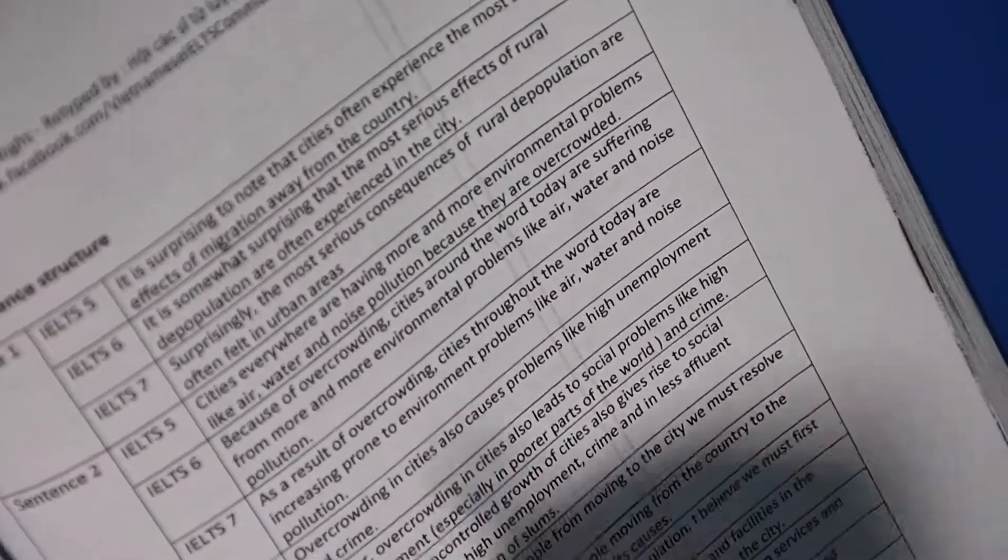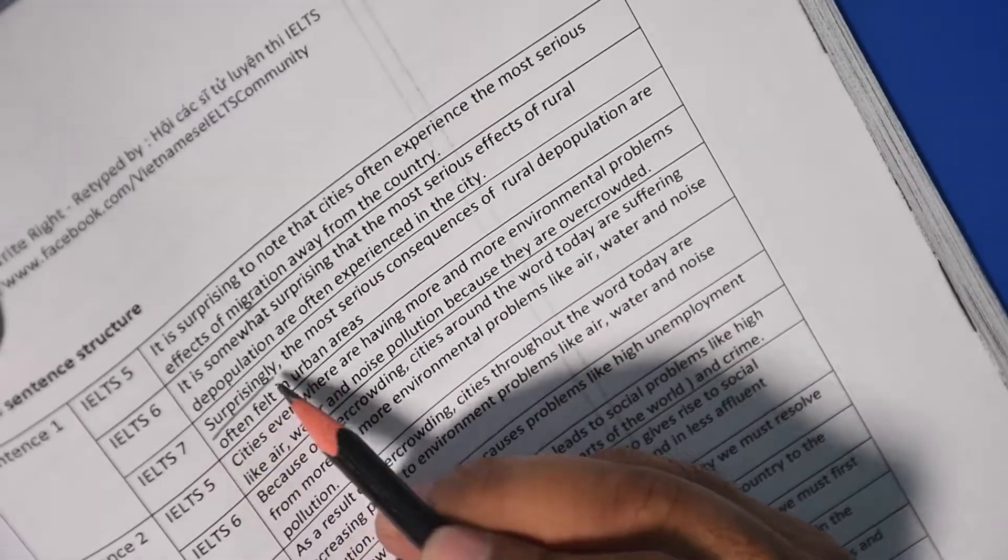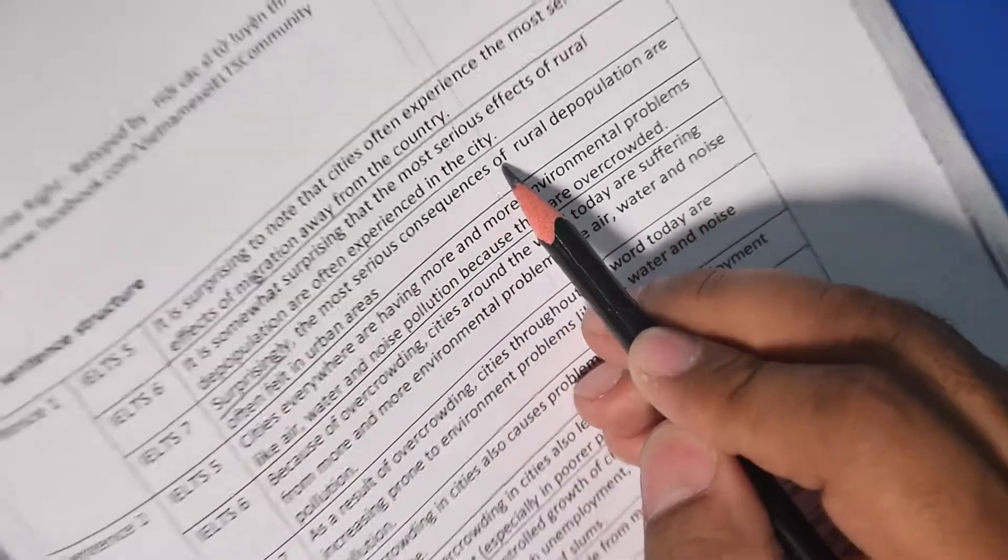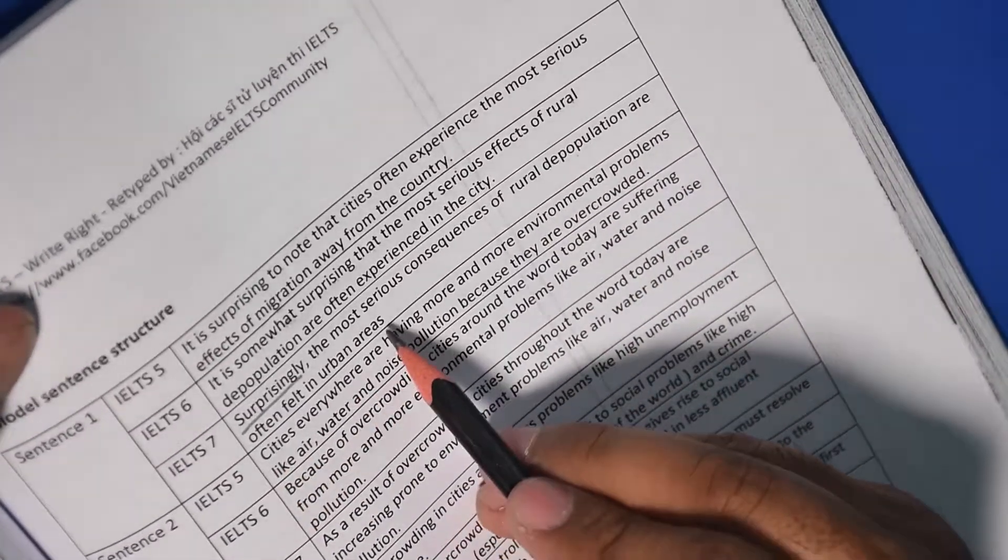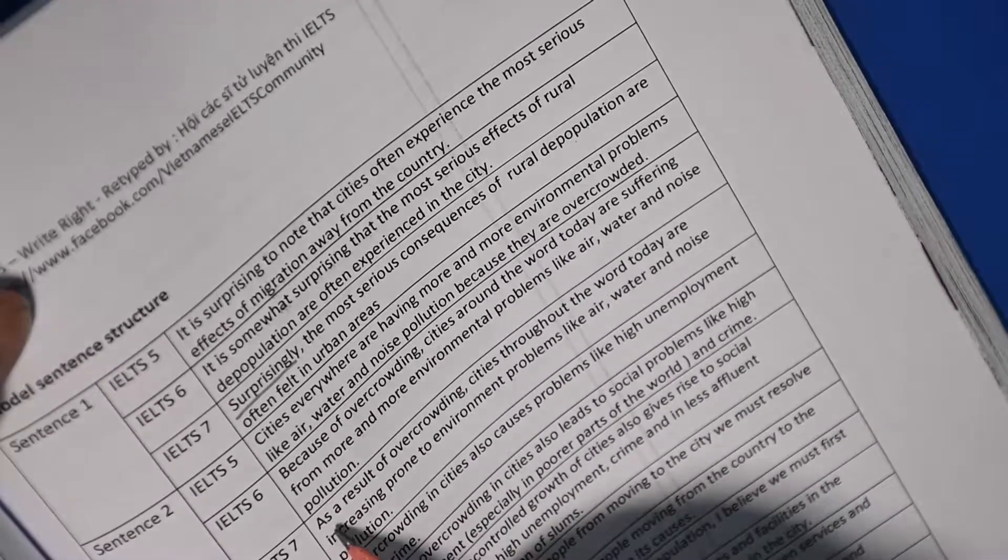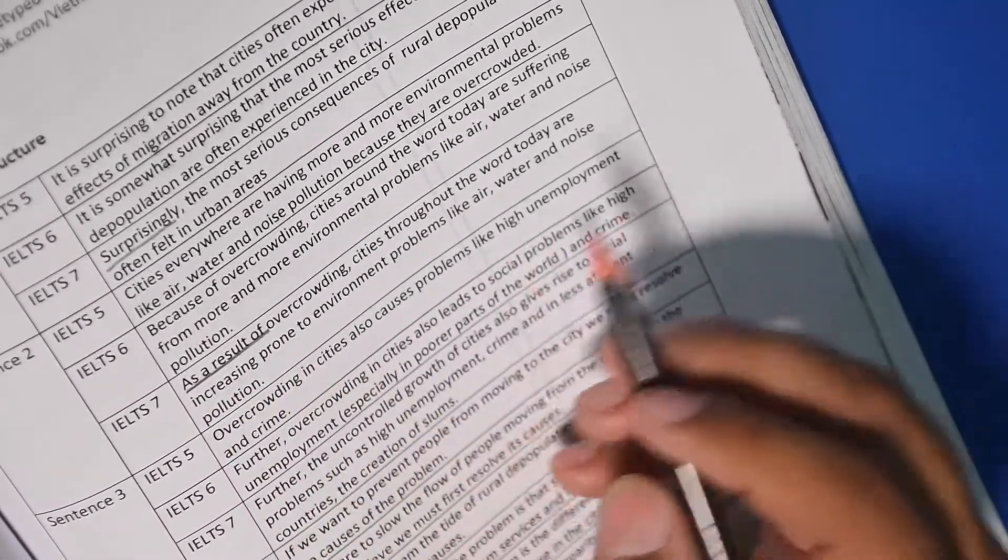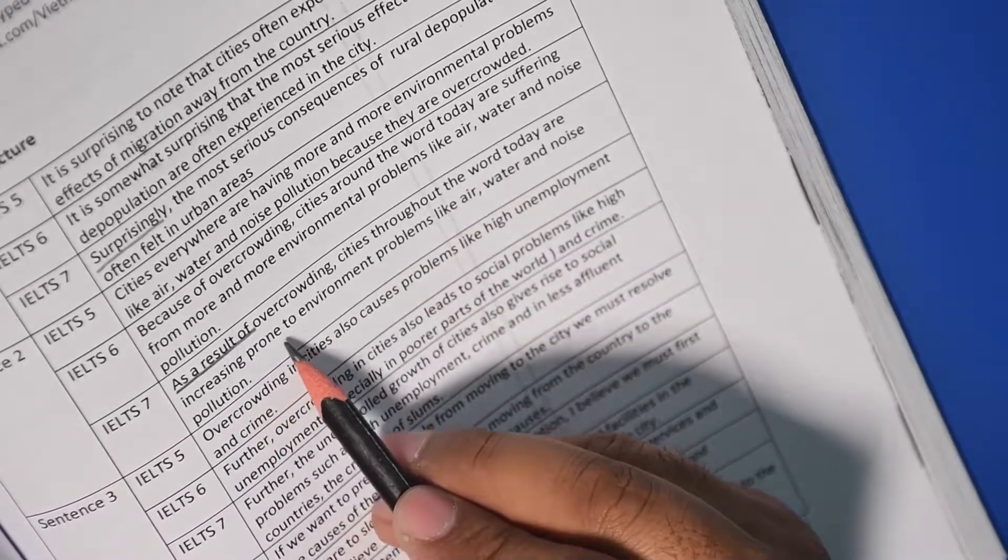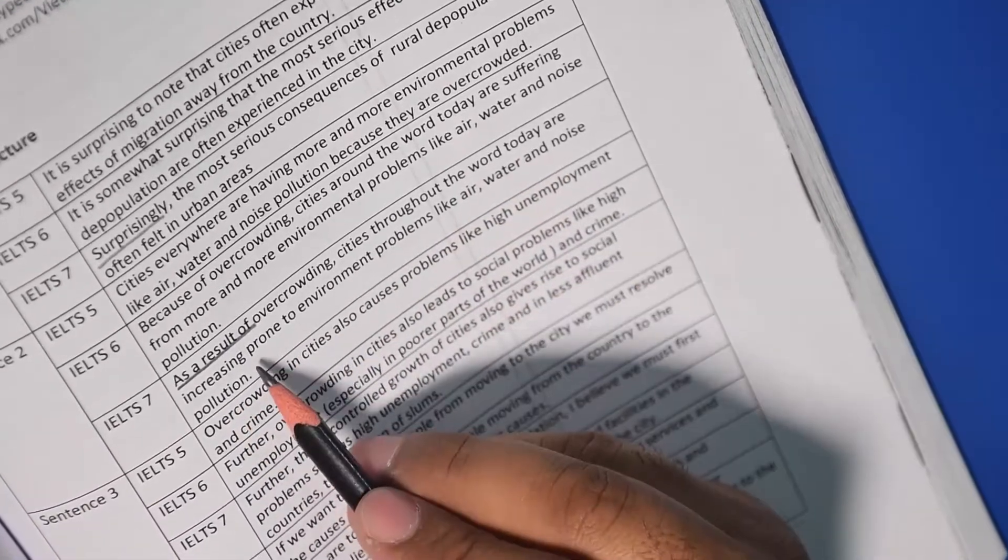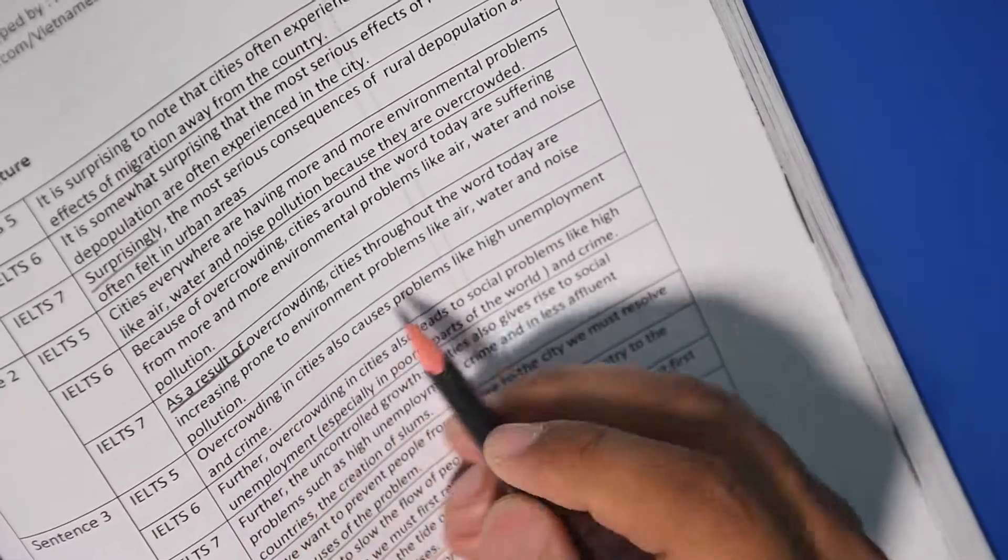Surprisingly, a very good start. The most serious consequences of rural depopulation are often felt in urban areas as a result of overcrowding. Cities throughout the world today are increasingly prone to environment problems like air, water and noise pollution.